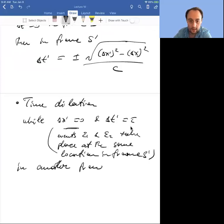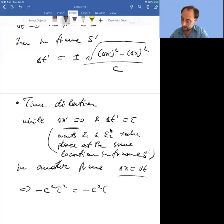In another frame, delta x equals vt, because frame S prime is moving with velocity v relative to frame S. When Alice starts brushing her teeth, when she ends brushing her teeth, in another frame she will have moved a distance delta x between the starting event and ending event. The delta x is v times delta t.